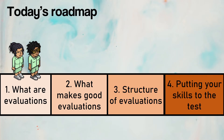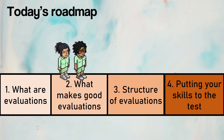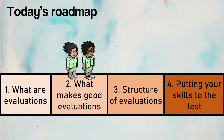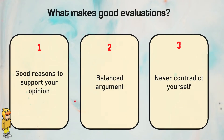Moving on to what makes good evaluations. In this section, if you want to score five or six marks, you have to avoid certain mistakes. Good evaluations consist of three things. Firstly, you need to have good reasons to support your opinion — that means you need data to support what you say and convince the reader that your opinion is not baseless.